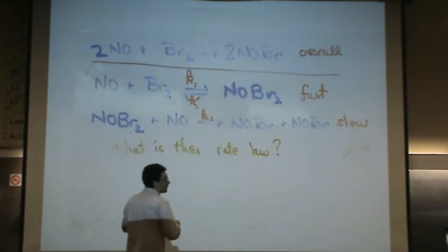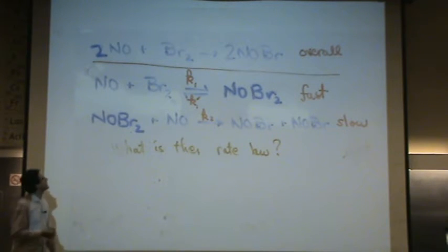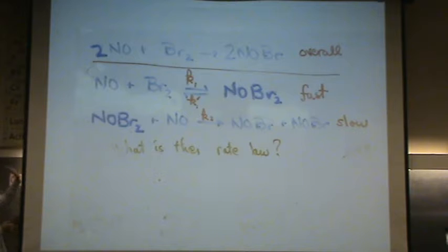Let me read it first if you can't read it. The overall reaction is 2NO plus Br2 goes to 2NOBr.